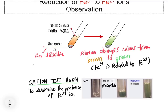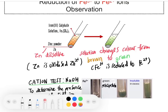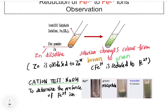Zinc dissolves because zinc is oxidized to Zn2+ ion. To test for the presence of Fe2+ ion, the NaOH cation test is used. When a few drops of sodium hydroxide solution are added, a green precipitate is formed. When excess sodium hydroxide is added, the green precipitate is insoluble, confirming the identity of Fe2+ ion in the product.